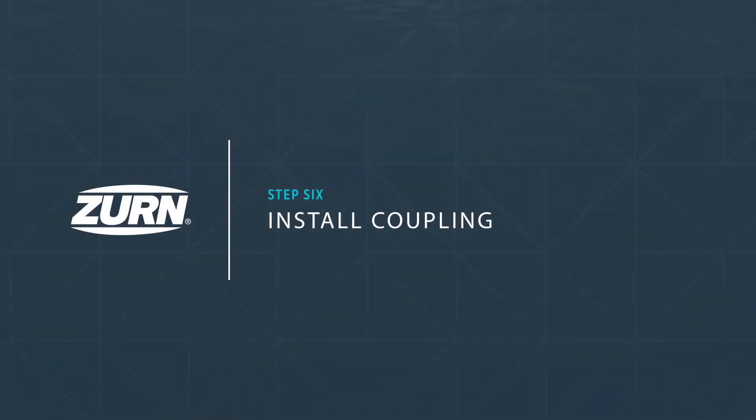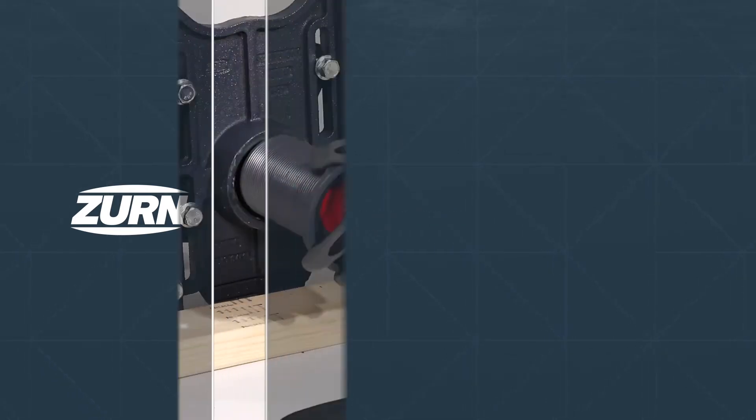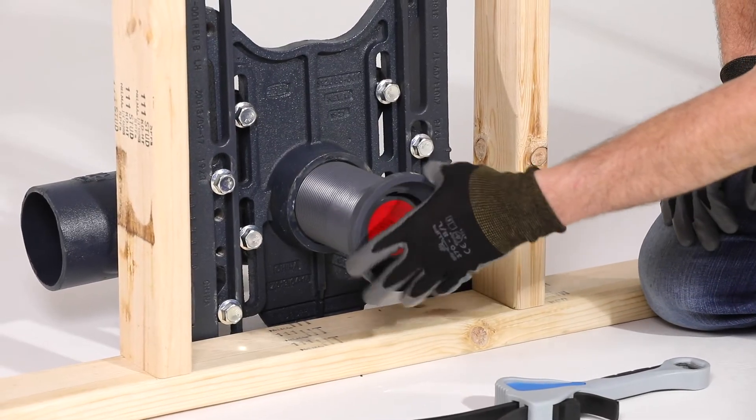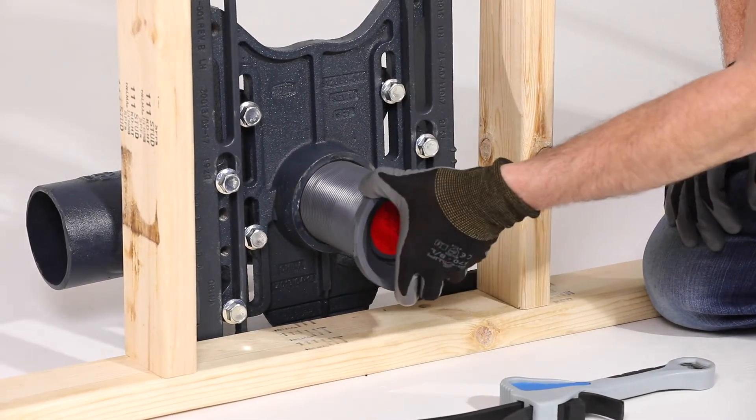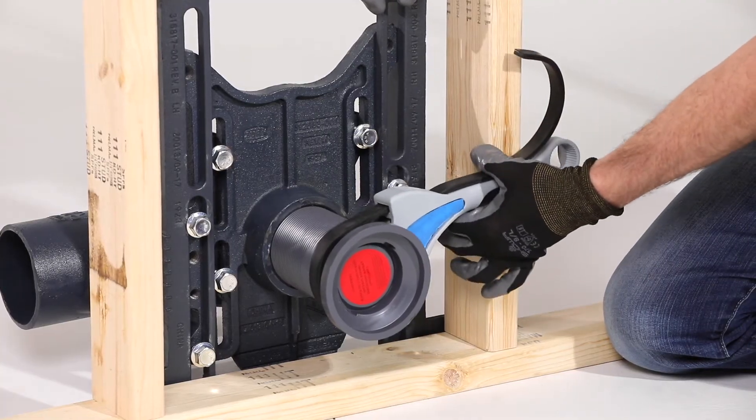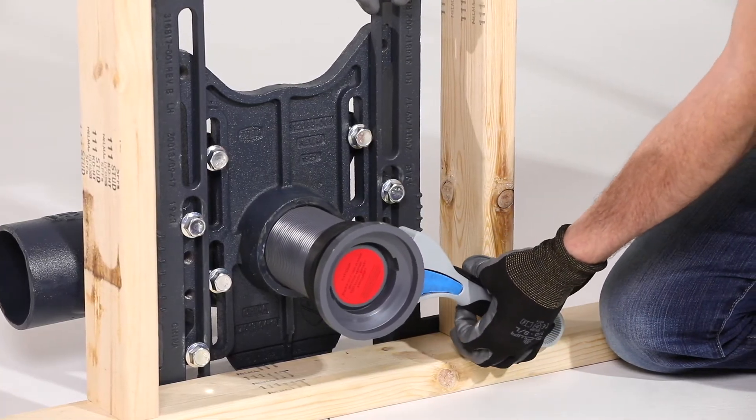Step six: installing the coupling. Thread the coupling by hand into the faceplate until it engages with the O-ring and begins to resist. Use your coupling wrench or strap wrench to create a watertight seal. Make sure the coupling engages the O-ring when threading into the faceplate.